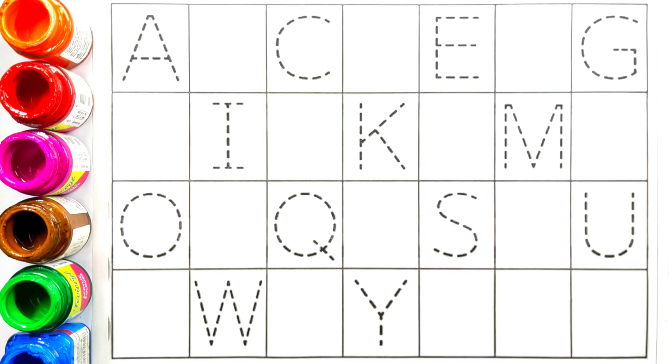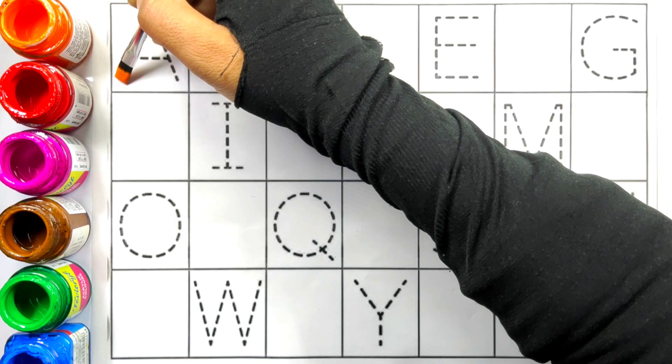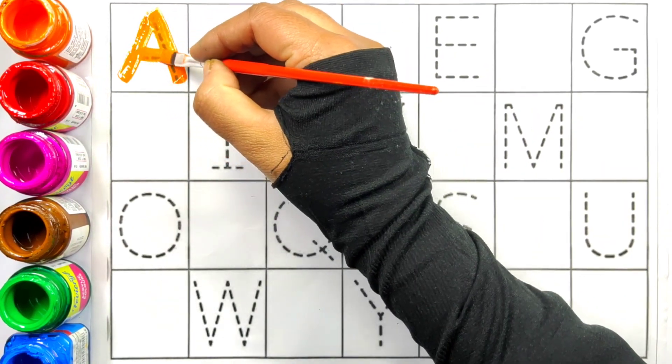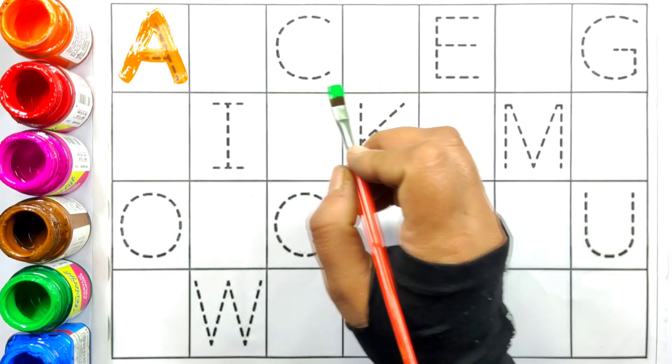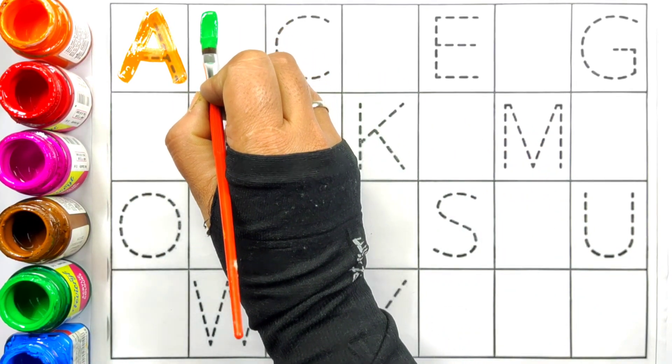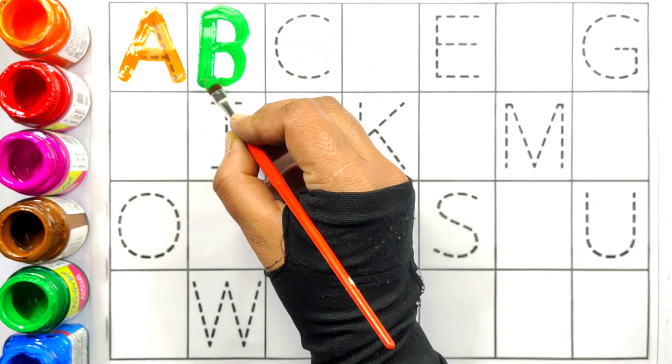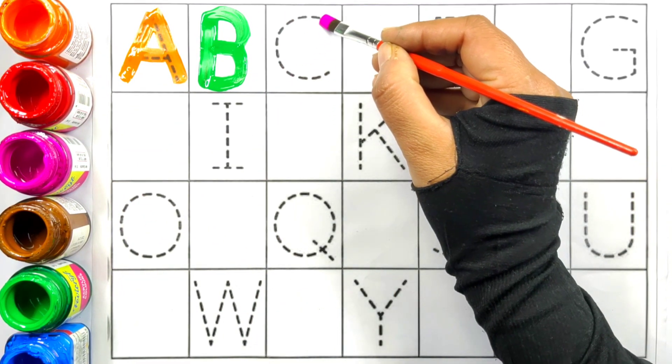B for Ball. Orange colour A, A for Aeroplane, A for Aeroplane. Green colour B, B for Ball, B for Ball. Pink colour C.